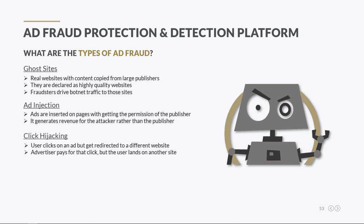Click hijacking occurs when a user clicks on an ad, but the fraudster redirects him to a different website. In this case, the advertiser pays for the impression but loses the prospective client. This ad fraud technique can be achieved in three ways: by infecting the user's computer with malware or adware, compromising the publisher's website, or the user's proxy server.